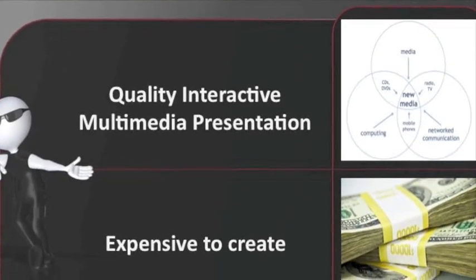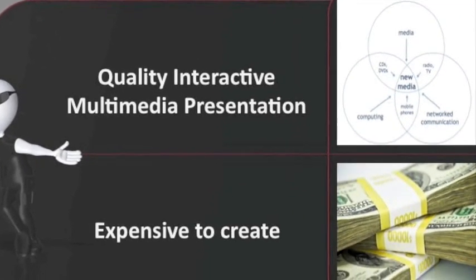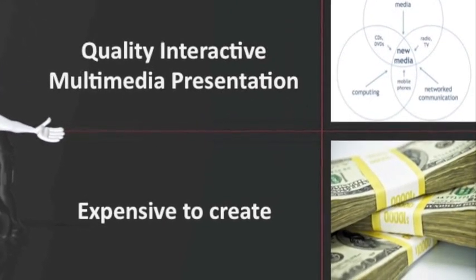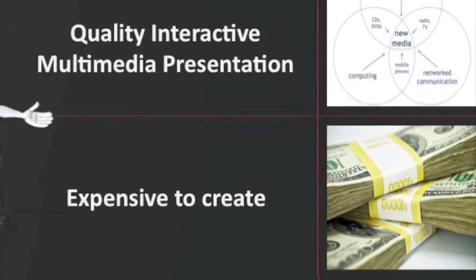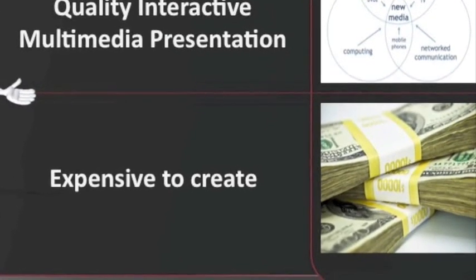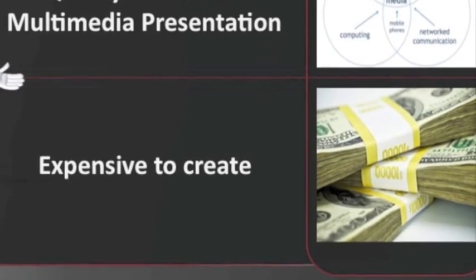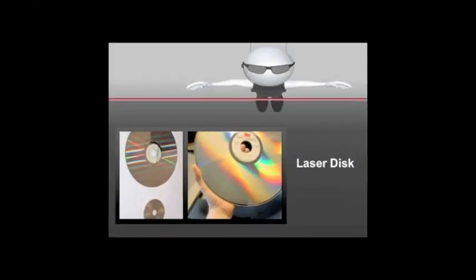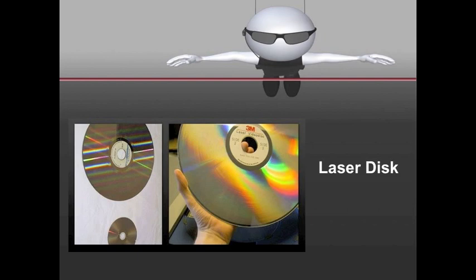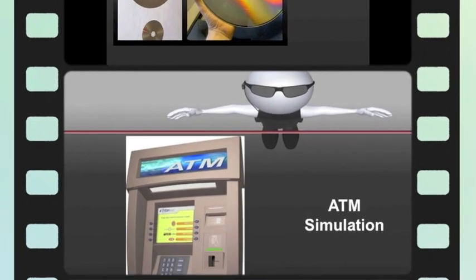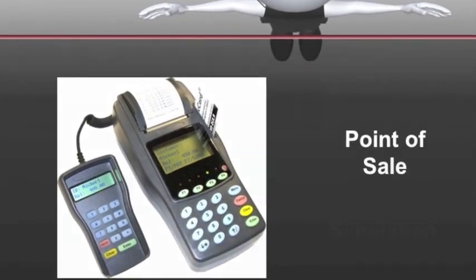The stated goal of the model is to produce quality interactive multimedia products. Producing multimedia products is a very expensive task, which is why the Bergman & Moore Model emphasizes the design phase to help reduce production costs and ensure quality products. Designed when laser discs were the most common form of video storage and compact discs, or CDs, were the emerging technology, the model began outside of academia by video companies designing and developing interactive technology such as ATM machines, point-of-sale devices, and simulation media.